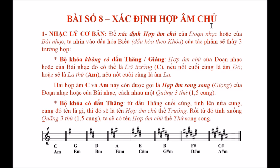Để xác định được hợp âm chủ của đoạn nhạc hoặc của bài nhạc, chúng ta nhìn vào dấu hóa biểu, tức là dấu hóa theo khóa của tác phẩm, thì sẽ thấy có 3 trường hợp.